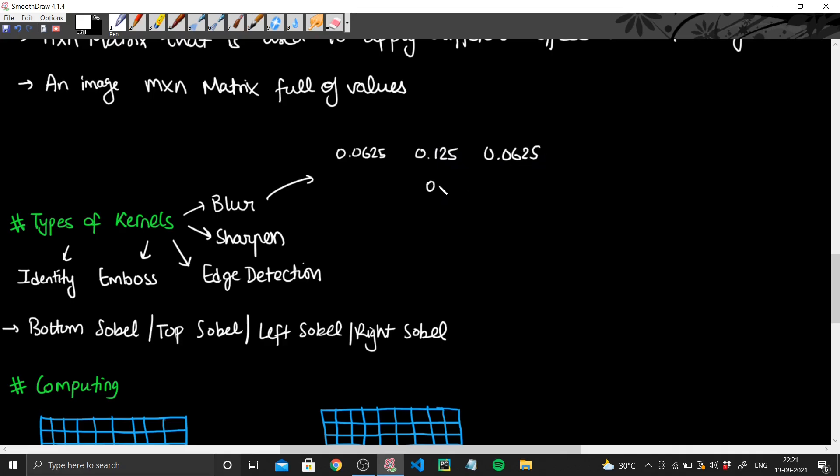It is like 0.0625, this is 0.125, and this is again 0.0625. This is 0.25, and it's just basically mirrored. This is again 0.125, this is again 0.125, this is 0.0625 and this is again 0.0625. So this matrix corresponds to the blur.